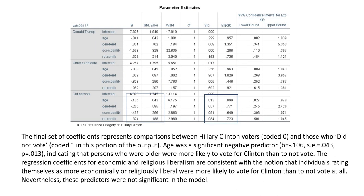The final set of coefficients represents comparisons between Hillary Clinton voters and those who did not vote. Age was a significant negative predictor, indicating that older persons were more likely to vote for Hillary Clinton than to not vote at all. The regression coefficients for economic and religious liberalism are consistent with the notion that individuals rating themselves as more liberal were more likely to vote for Clinton than to not vote, though these predictors were not significant in the model.